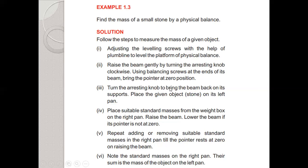Place the given object — the stone — on the left pan. Place suitable standard masses from the weight box on the right pan. Raise the beam; if the pointer is not at zero, repeat by adding and removing suitable standard masses in the right pan until the pointer rests at zero when the beam is raised. Note the standard masses on the right pan — their sum is the mass of the object on the left pan.